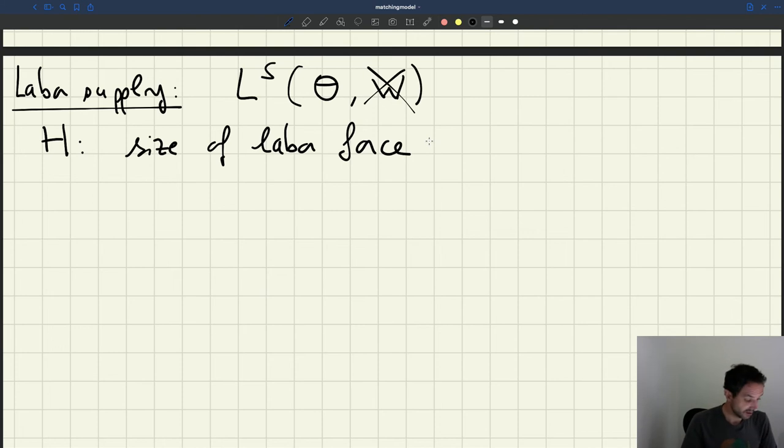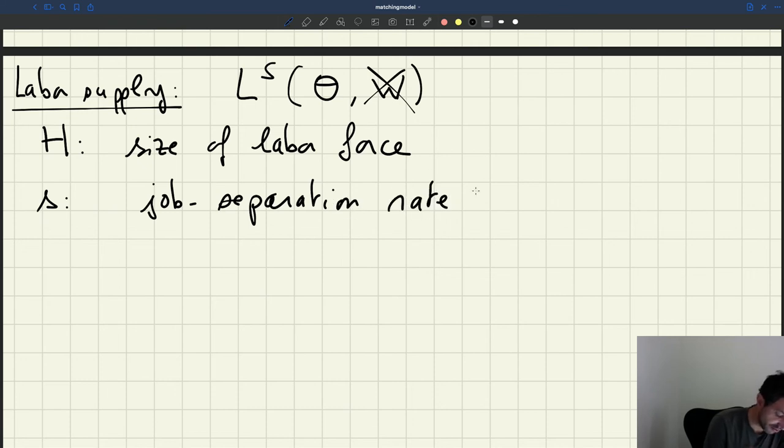So another key parameter here that we're going to introduce is s, which is a job separation rate. So h is just going to be a positive number. S similarly is just going to be a positive number. So the job separation rate is the rate at which people lose their job. And that can capture all kinds of things, right?